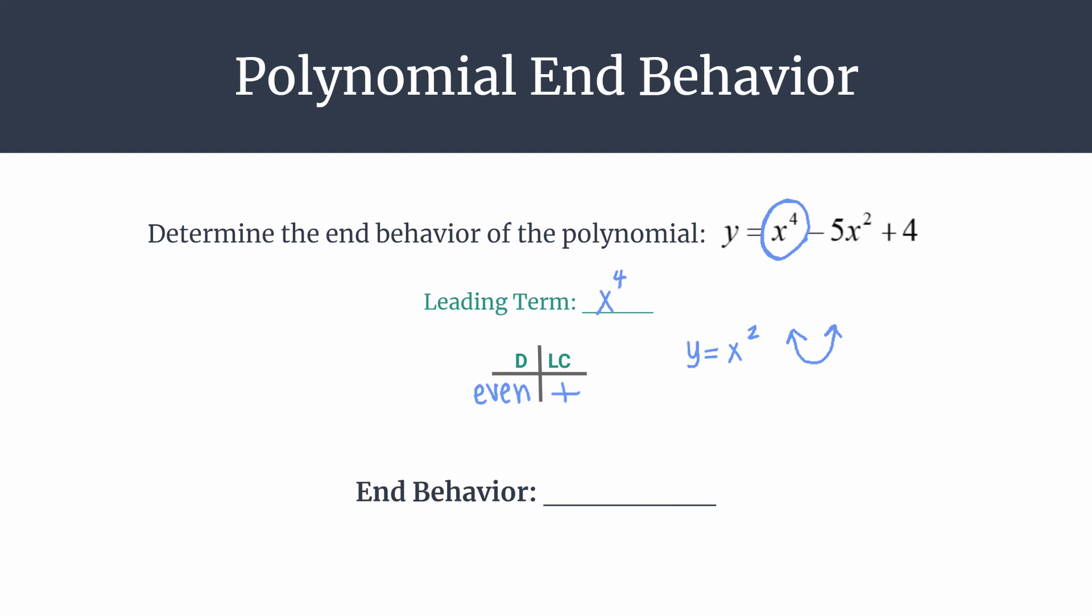And so looking at those two ends, that'll tell us our end behavior for this x to the fourth polynomial. So that leading term is really pulling the strongest on our graph.